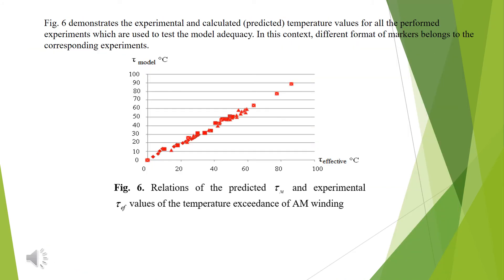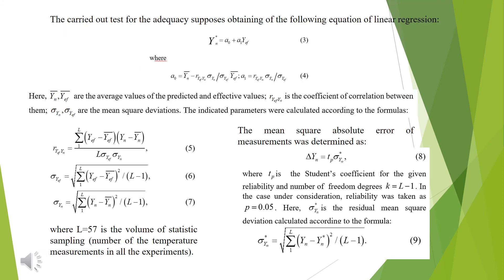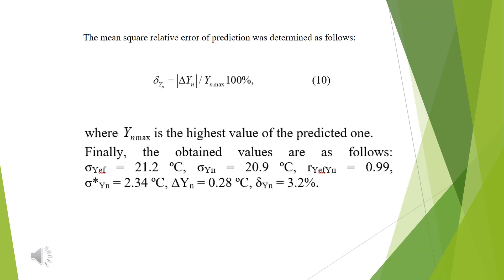Figure 6 demonstrates the experimental and calculated predicted temperature values for all performed experiments, which are used to test the model adequacy. Different formats of markers correspond to the respective experiments. This slide presents the formulas used to test the adequacy of our thermal model, and the results of the adequacy testing are shown on the following slide.